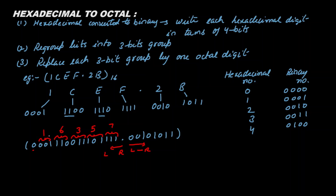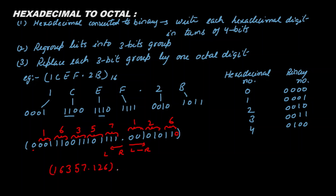After grouping, one of the groups gives the octal digit 6. Combining all the 3-bit groups gives the final octal representation of the hexadecimal number 1CEF.2B.